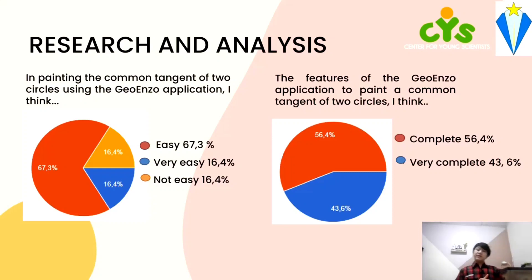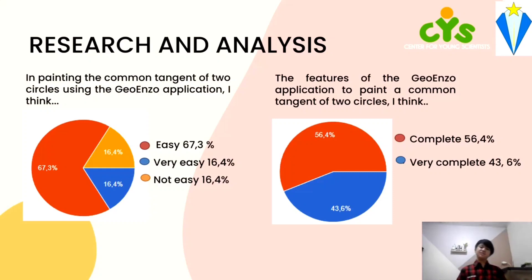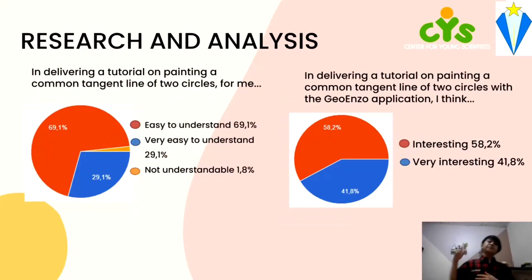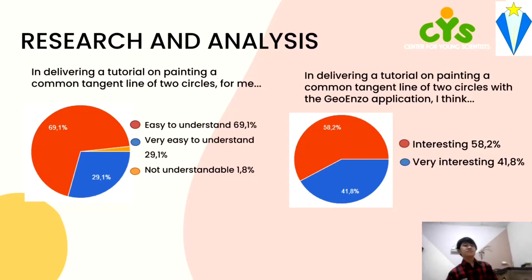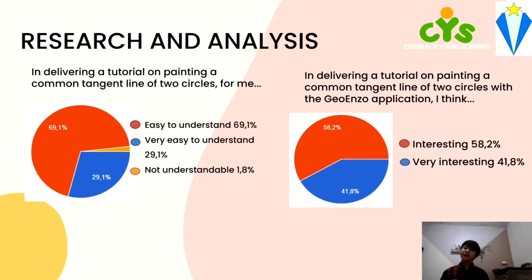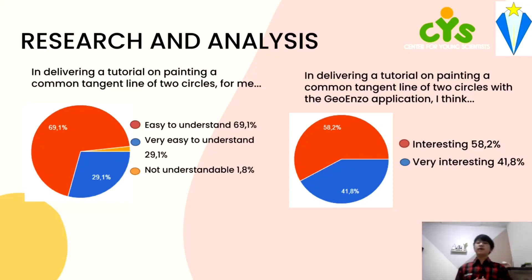In this diagram, regarding the features of the geo-enzo application to paint a common tension of two circles, students responded: complete 56.4%, and very complete 43.6%. In delivering a tutorial on painting a common tension line of two circles, the geo-enzo application can help and make it easier for Tarakanita Gani Serpong Junior High School students. Students responded: interesting 58.2%, very interesting 41.8%.